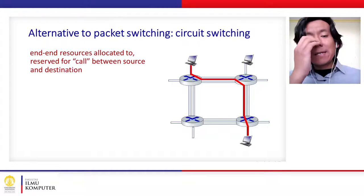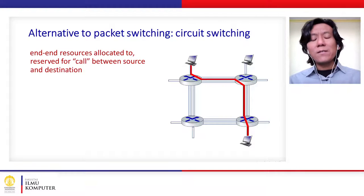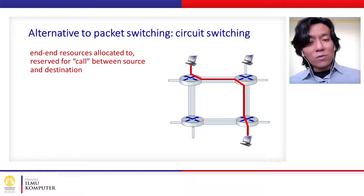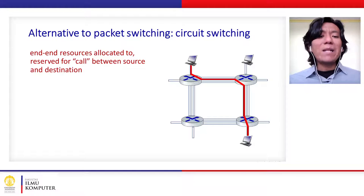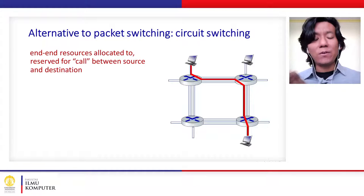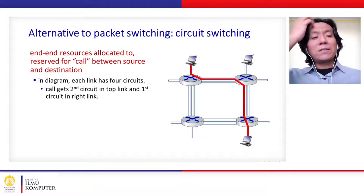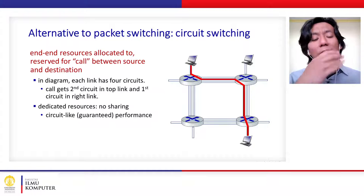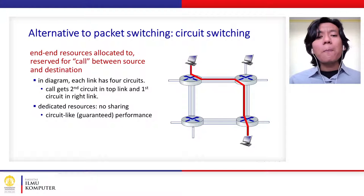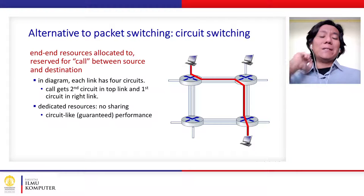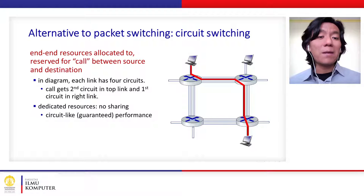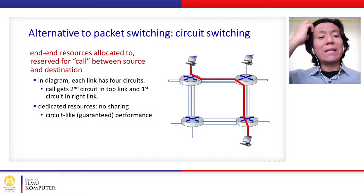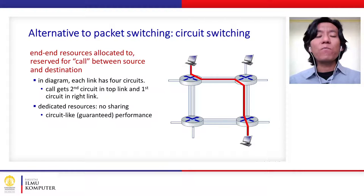Is there any alternative to packet switching? Yes. The alternative is called circuit switching. Instead of using the same channel shared by different packets or different users, in circuit switching we separate a channel into different dedicated circuits. Each user can exclusively use a particular channel without sharing it with other users. The transmission is guaranteed because the transmission rates are used only by a particular user, providing dedicated performance and dedicated services for that circuit.